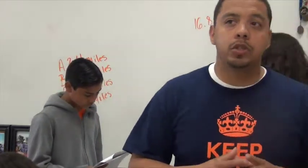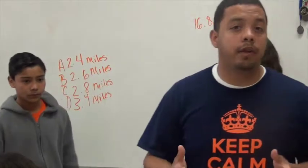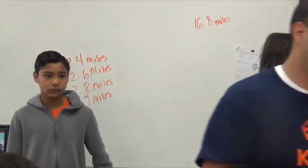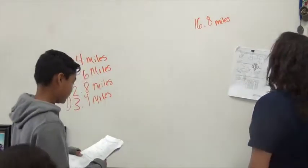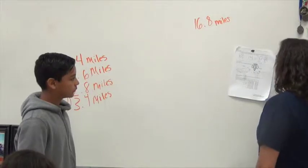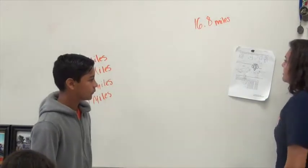So again, that's just another way to make sense of the problem. So without further ado, here's Leo and Elizabeth. Okay, so the problem reads: Samantha ran a total of 16.8 miles last week Monday through Saturday.